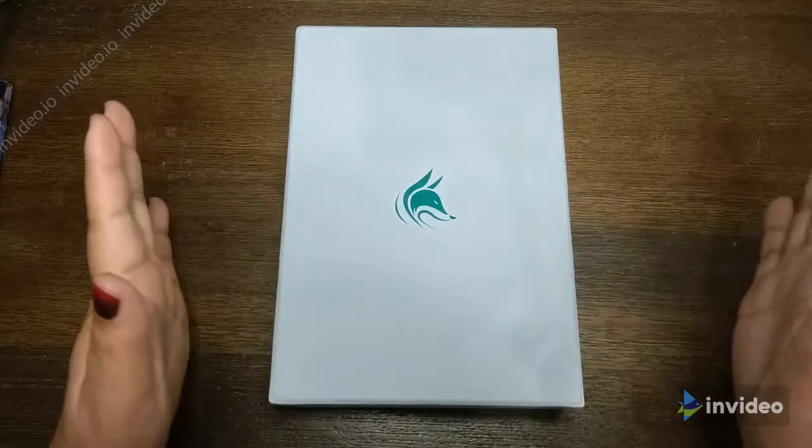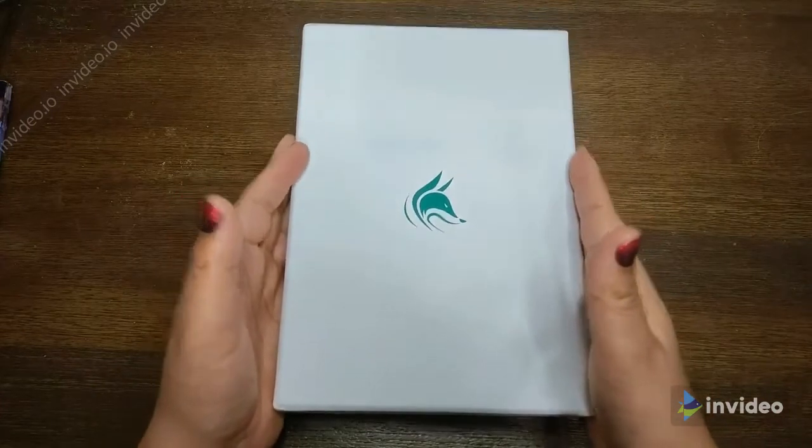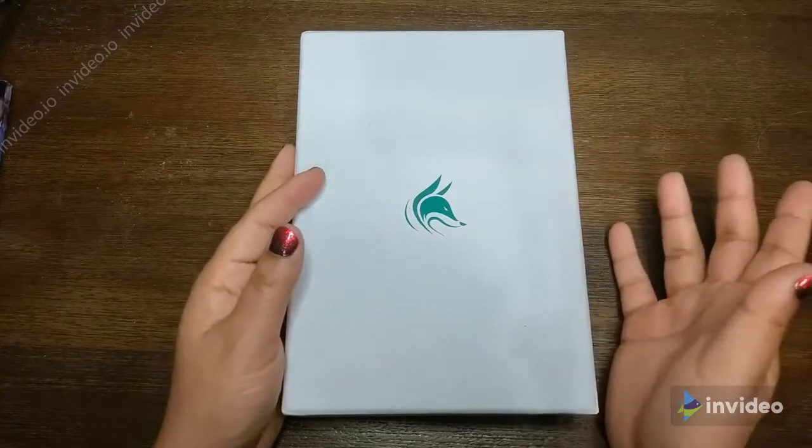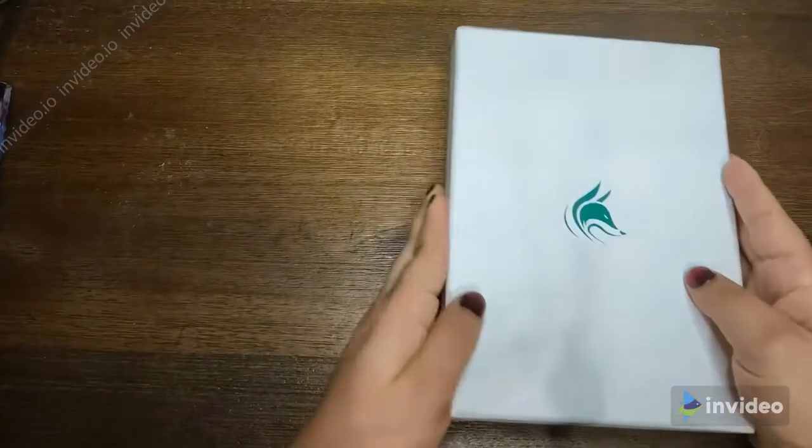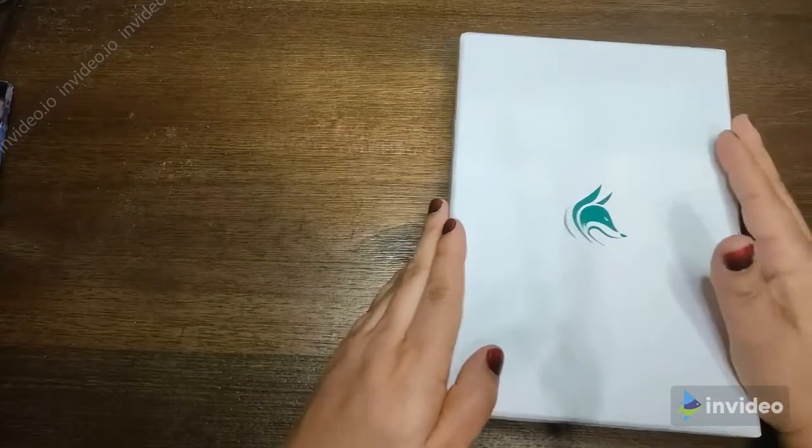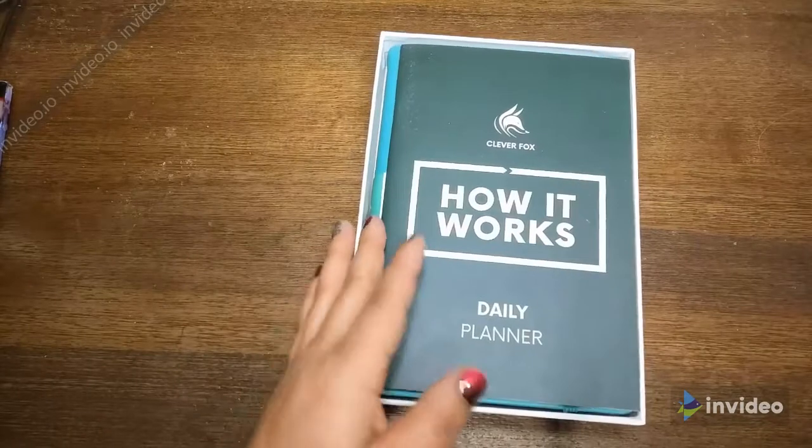I got this on Amazon. I think it was like $26 or $27, so not the most pricey planner ever purchased, not the most inexpensive, but I've heard good things. It comes in this little white box with a greenish Clever Fox logo on the front.